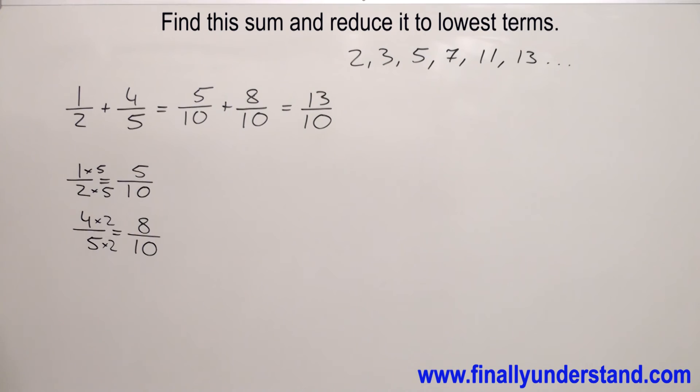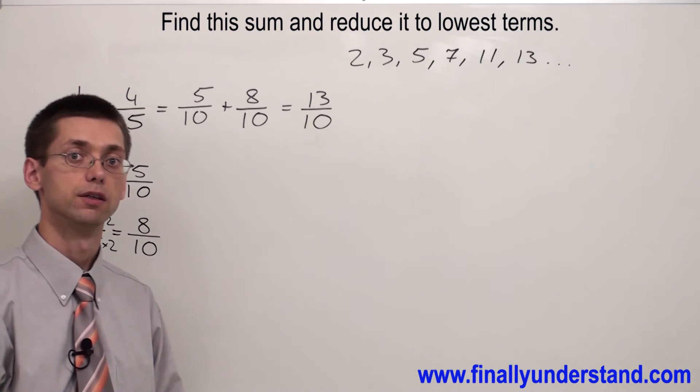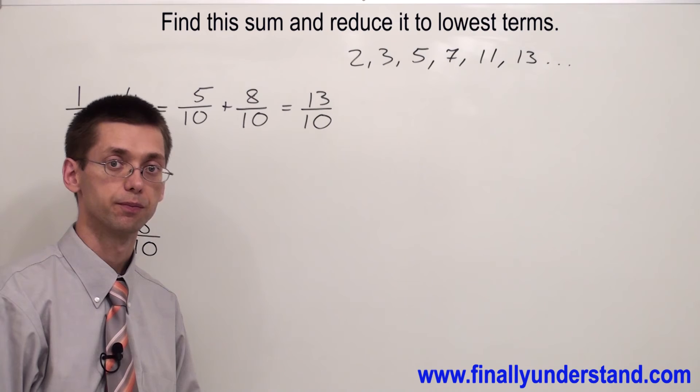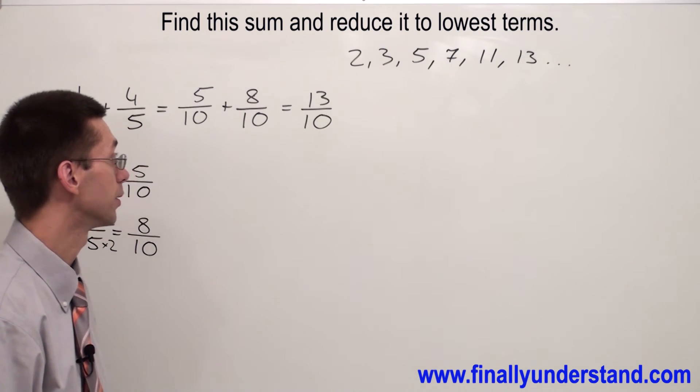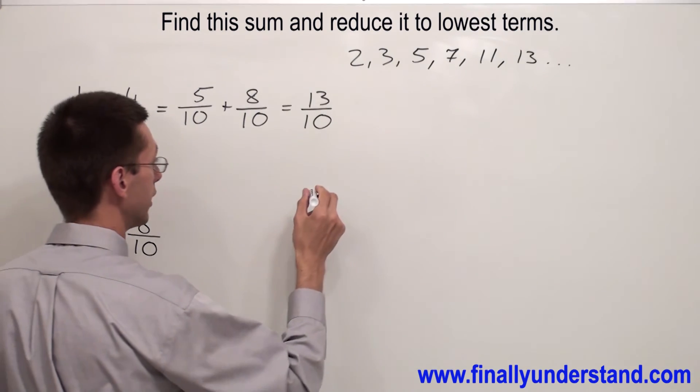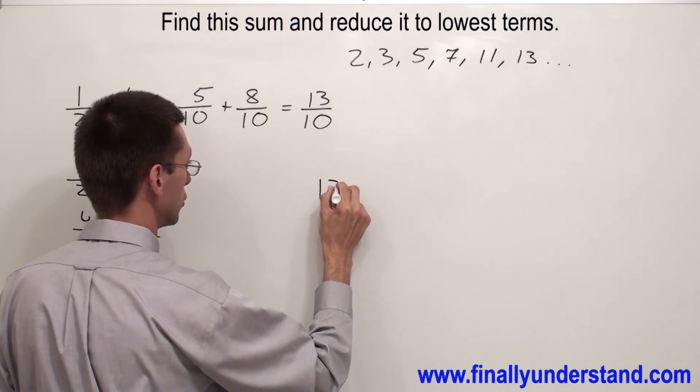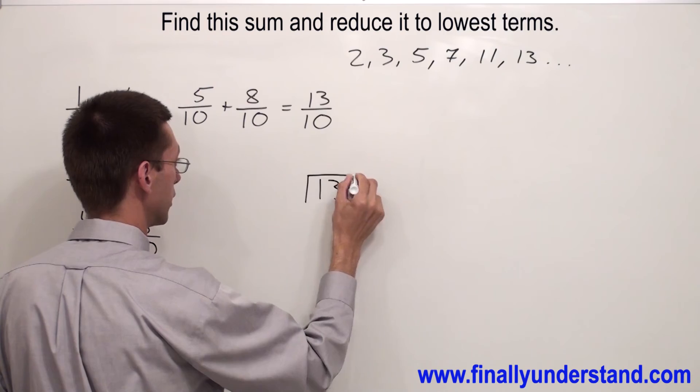13 over 10. This is the example of the improper fraction. Improper fraction I am going to change to the mixed number. Simply I have to divide 13 by 10.